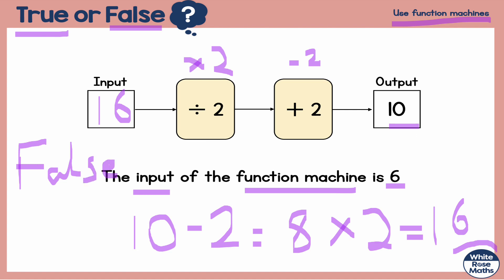Another way that you can check it: if the input is going to be 6, then I should get an output of 10. 6 divided by 2 is 3, 3 plus 2 is 5. So when the input is 6, the output you get is 5.